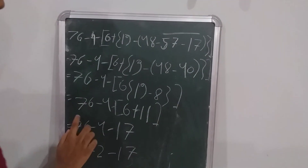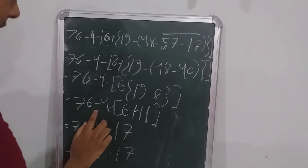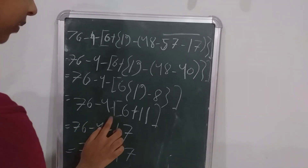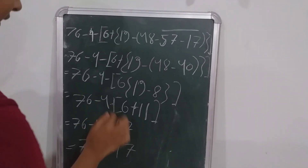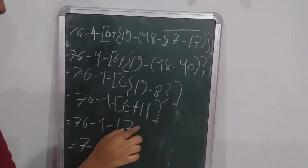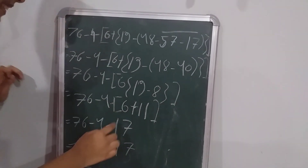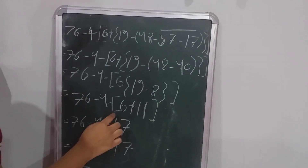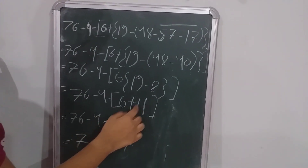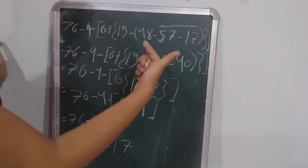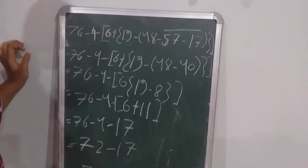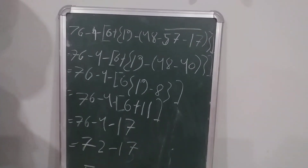Top of 76, B of 4, B of first bracket, second bracket, third bracket, 6, plus 11. Top of second bracket close.